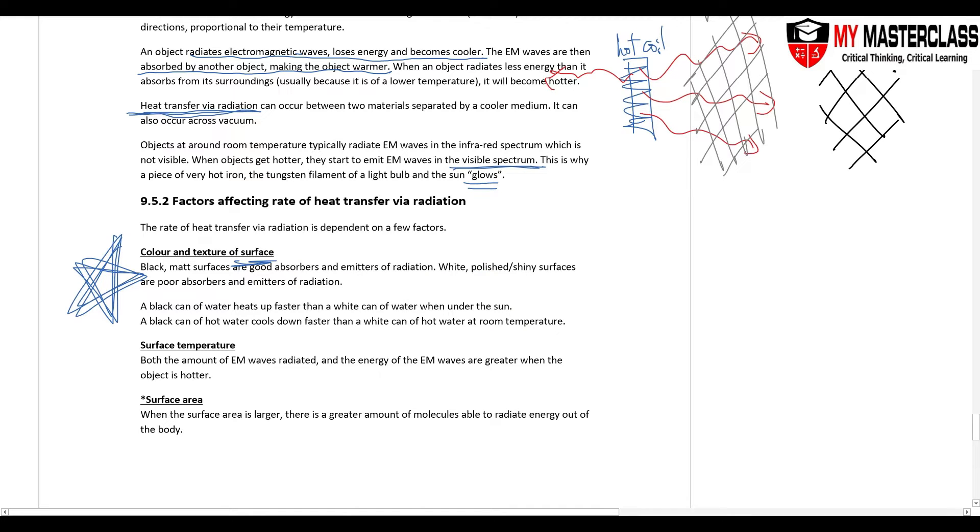If it is absorbing radiation, then you say it is a good absorber. If it is emitting radiation, then it is a good emitter. So let's say I have an object that is cold compared to the hot surrounding. You will be discussing whether the object is absorbing heat, so you will see whether it is a good absorber of radiation or not.